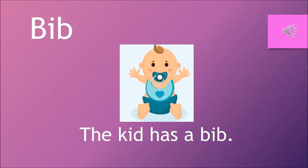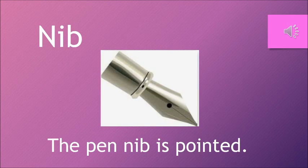Now let's make sentences with a few words. The first word is Bib — the sentence is: The kid has a Bib. Next, Nib — the sentence is: The pen's Nib is pointed. Can you see the pen's Nib? It is pointed. So a quick recap of the three words: Bib, Nib, and Rib.